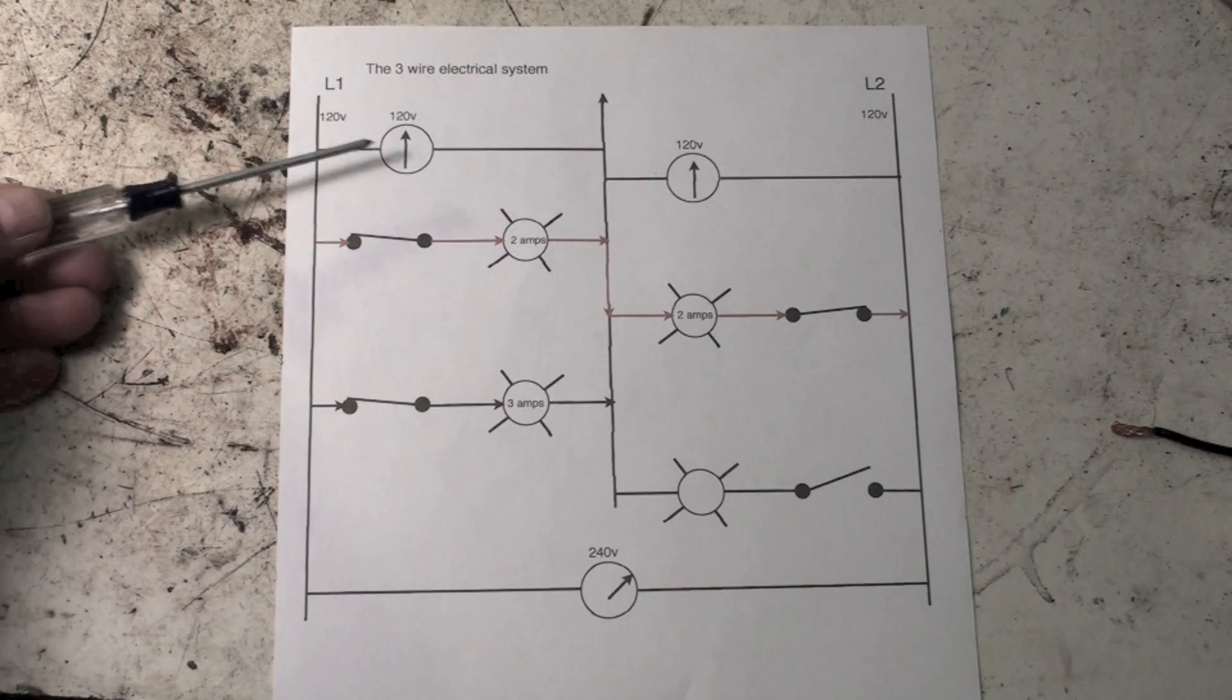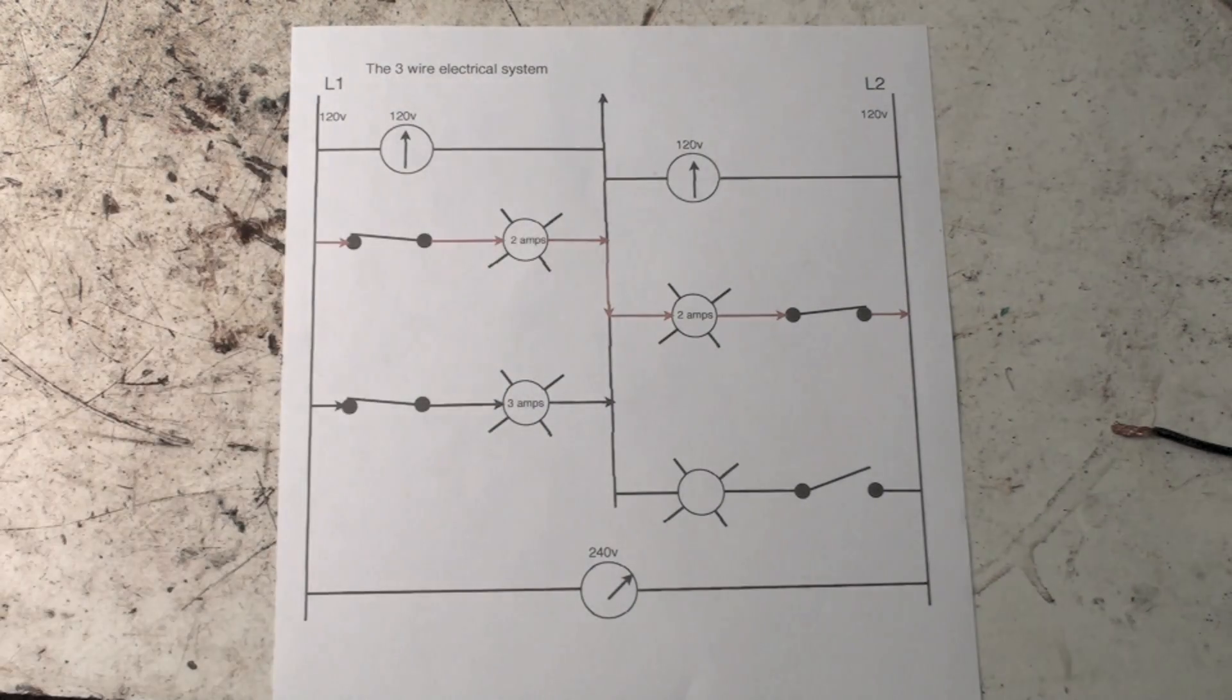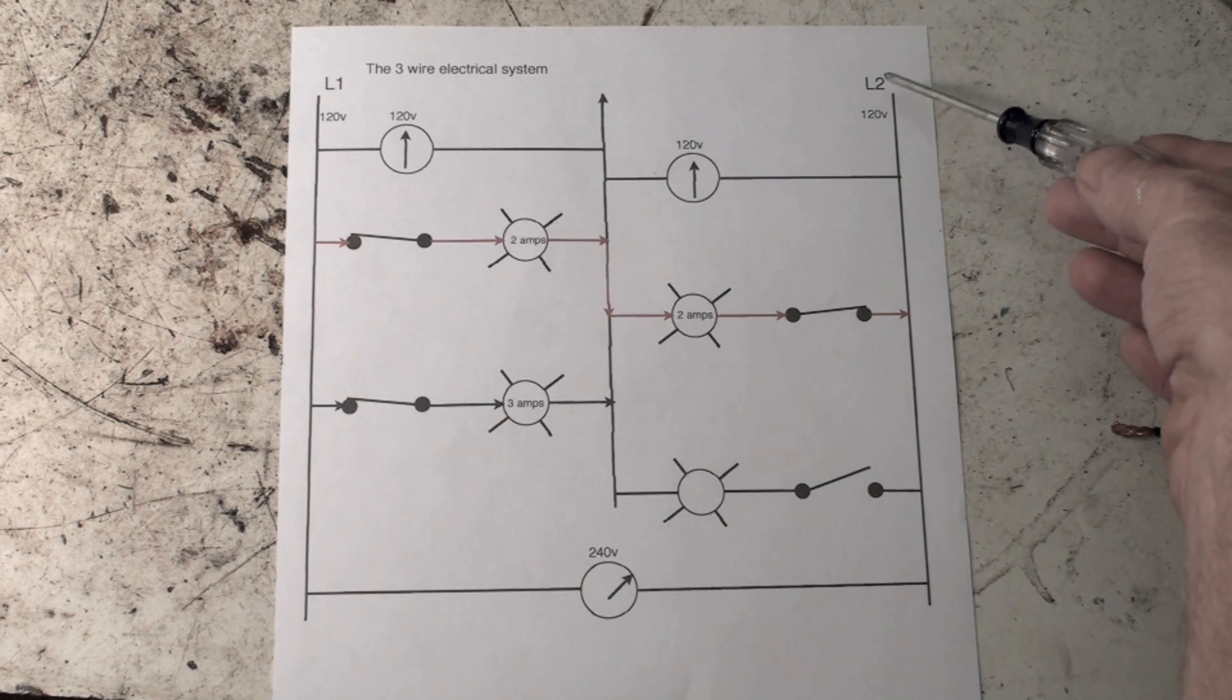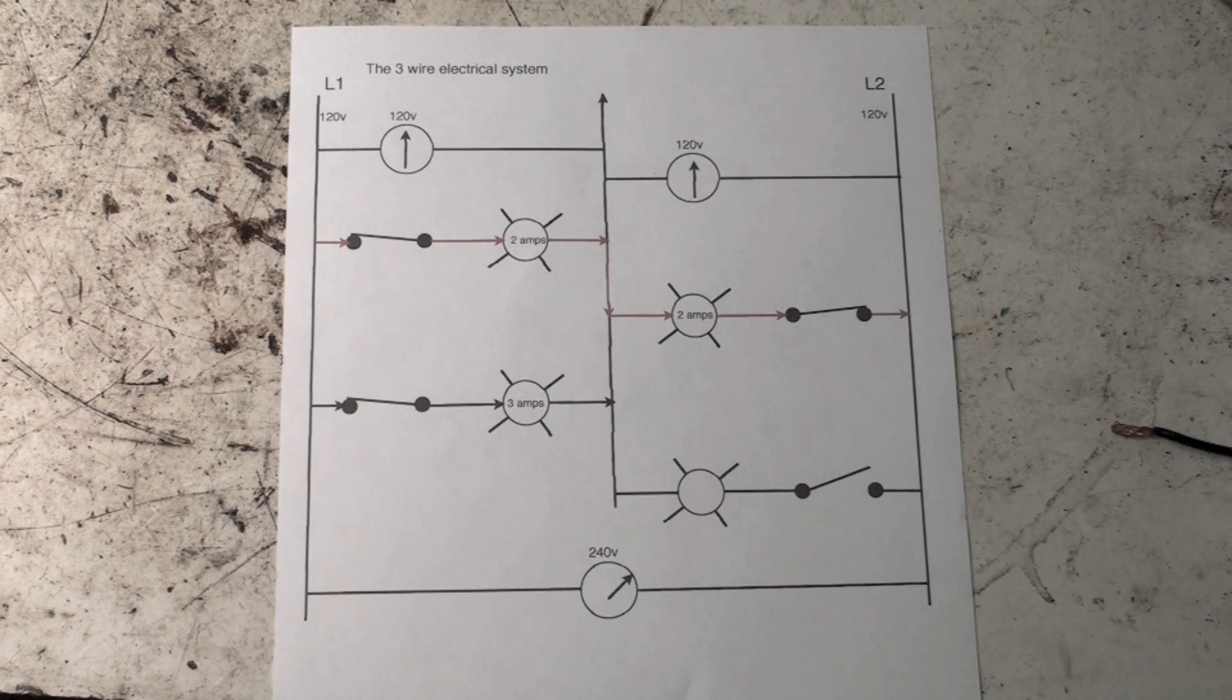This is a voltmeter. If I put the voltmeter from the 120-volt L1 to neutral, I will read 120 volts. Likewise, if I go across to L2 and put a voltmeter across to the neutral, I will read 120 volts.